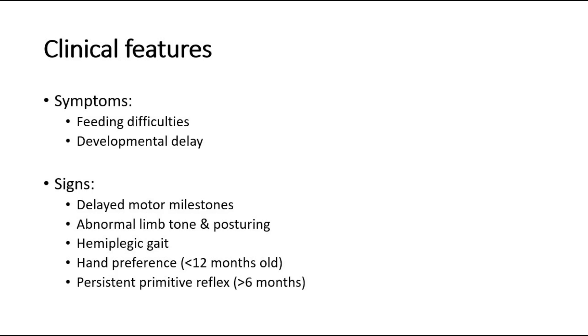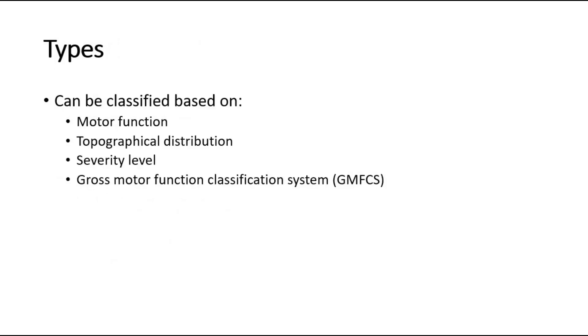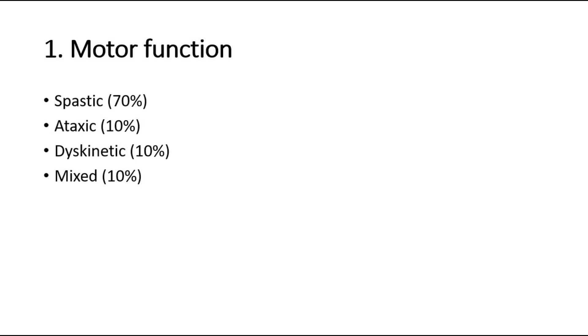Cerebral palsy can be classified based on four features: motor function, topographical distribution, severity level, and the GMFCS (Gross Motor Function Classification System). Based on motor function, there are four types: spastic, ataxic, dyskinetic, or mixed type. The most common one is spastic cerebral palsy, which consists of 70% of all the cases.